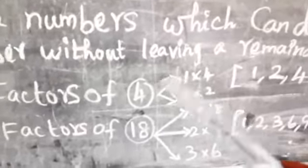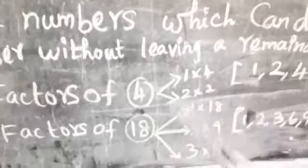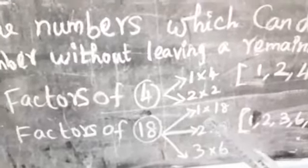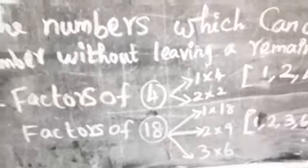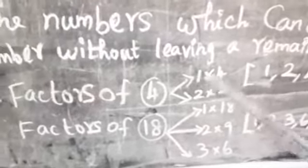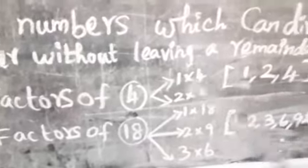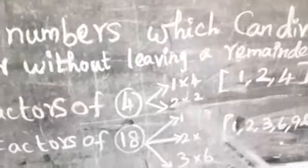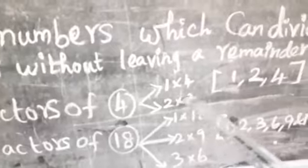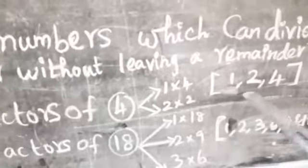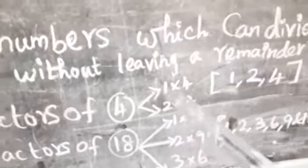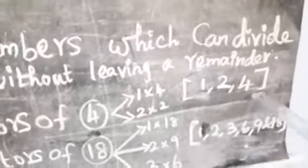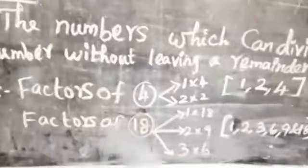Now look at the factors of four. One times four equals four, then two times two equals four. Therefore the factors of four are one, two, and four.